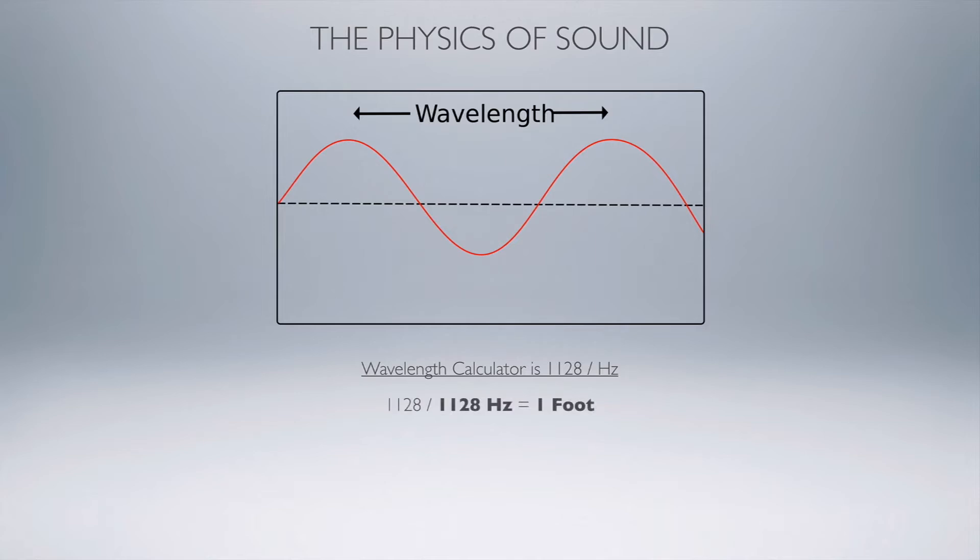We could do something like this: 1128 Hertz, which is just a little bit over 1k (1.1k). If you divide that out, that'll be one foot. So the wavelength of a little bit over 1k, which is in the middle of our hearing, is about one foot.